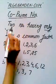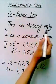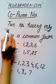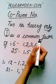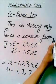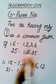Co-prime numbers. Two numbers having only one as a common factor are known as co-prime numbers.